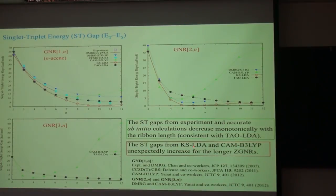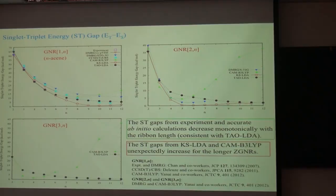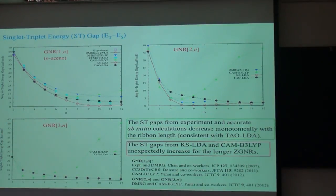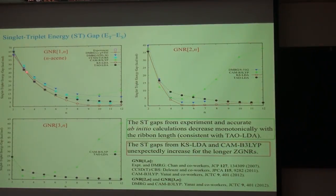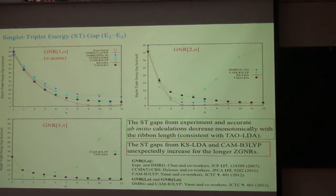However, the singlet-triplet gap from constrained LDA, hybrid DFT, and KS DFT unexpectedly increases for longer ZGNRs due to symmetry breaking in the corresponding singlet states, with the symmetry-breaking error growing larger for wider ribbons. The experimental data points (pink squares) are available only up to pentacene because longer chain acenes are very hard to synthesize, making this a challenging system both experimentally and theoretically, as accurate methods like DMRG and coupled-cluster are not applicable for long-chain acenes.